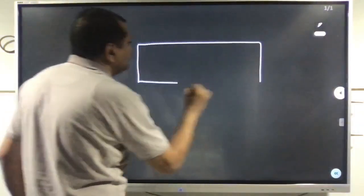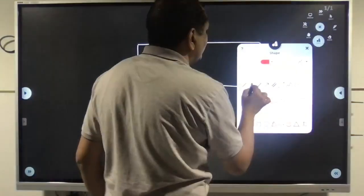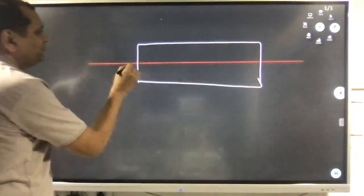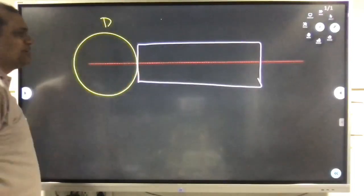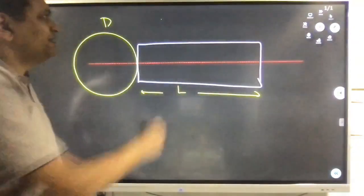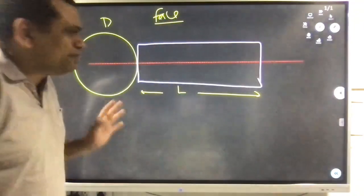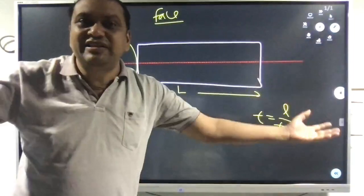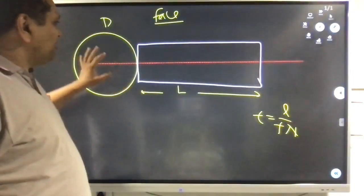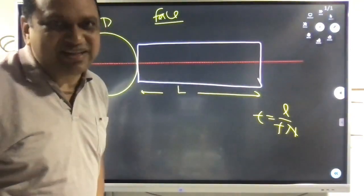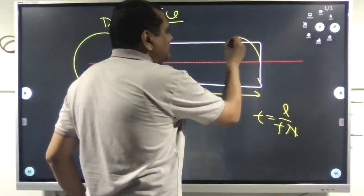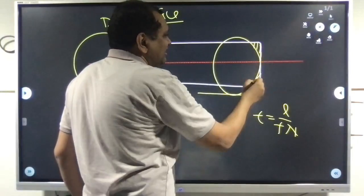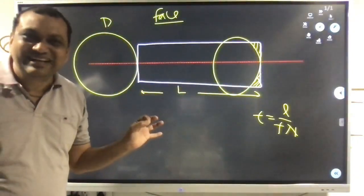Suppose if it is a face milling operation. This is the center line, and I am talking about the rough cut now. Here is the cutter, D is the diameter of cutter, and L is the length of work. Machining time is L divided by feed (Fn). When the cutter moves L distance, this is the position of the cutter — still some material is not machined, so machining is not complete.